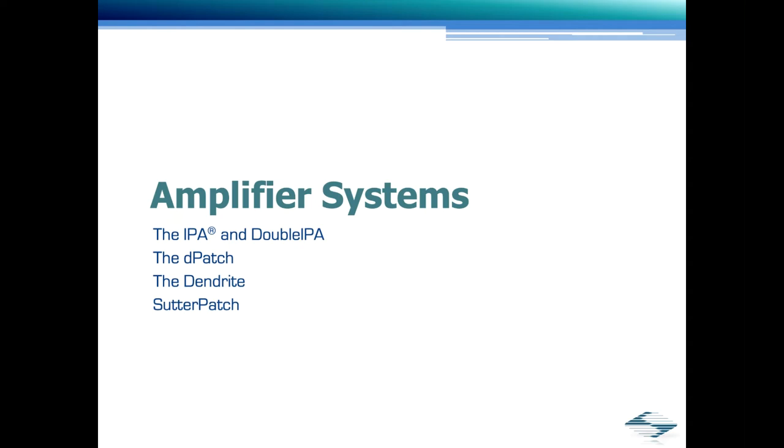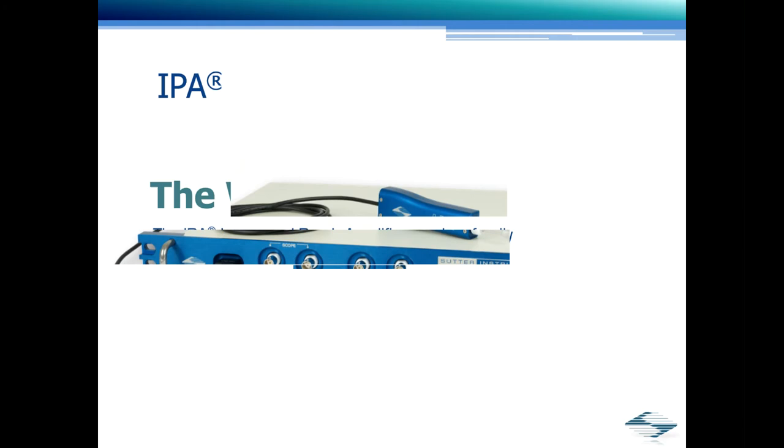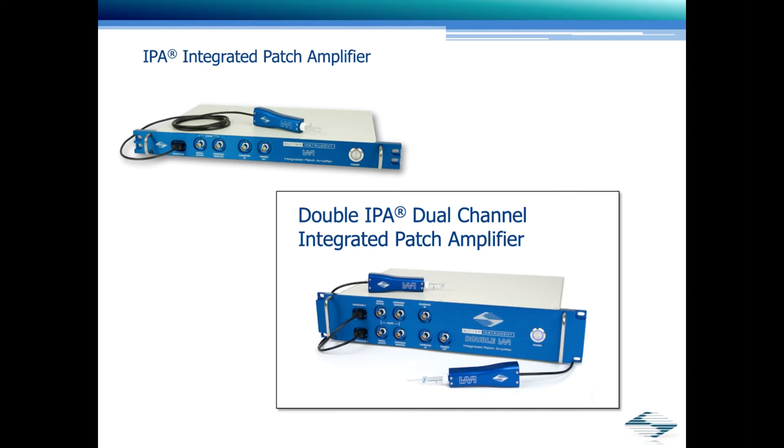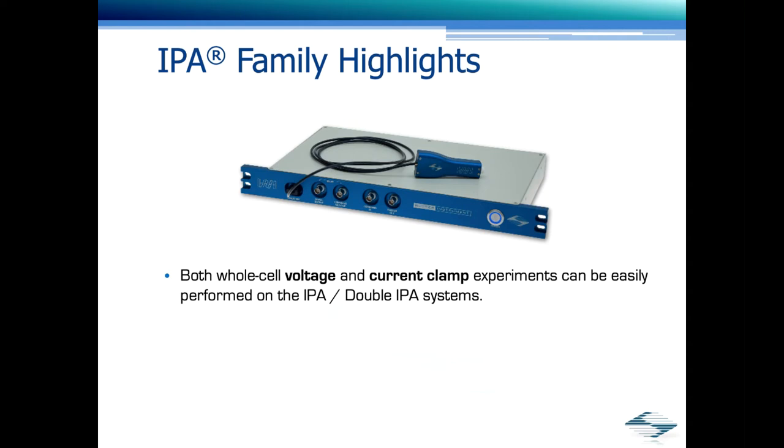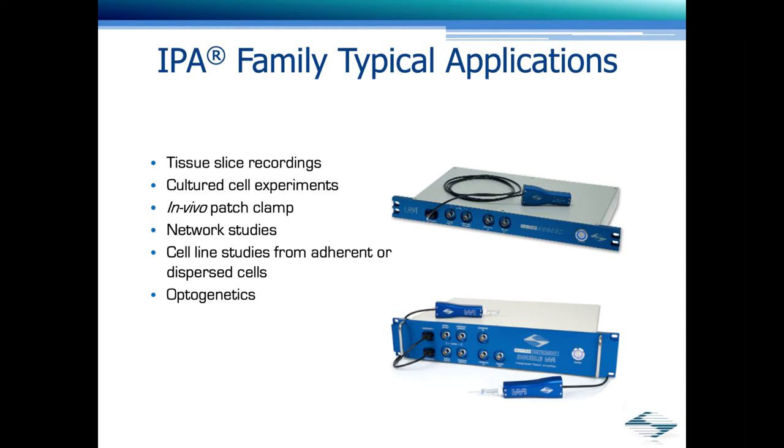The final piece of the puzzle is our amplifier system. Sutter has a couple of options for those as well. The feature set of the IPA will meet the requirements for the bulk of our customers. The IPA is available in either a single head stage or dual head stage configuration. Typical highlights include whole cell voltage and current clamp experiments. Fully integrated patch clamp amplifier with data acquisition system. And includes the Sutter Patch data acquisition software. These are some of the applications that the IPA is well suited for: tissue slice recordings, cultured cell experiments, optogenetics, name a few.